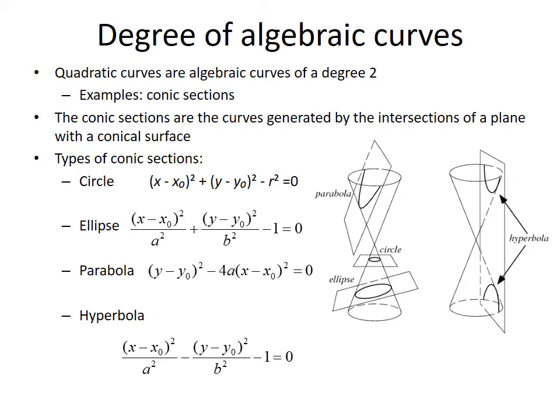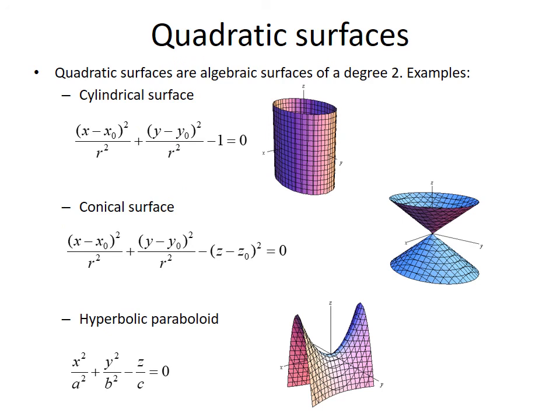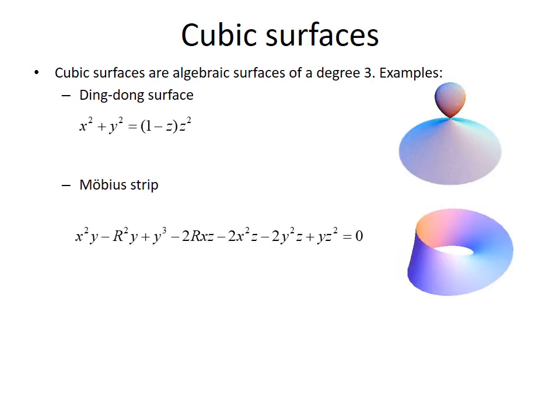Their implicit functions are given at the left. Similarly, algebraic surfaces of degree 2 are called quadratic surfaces. I think that you already got the point and now you understand how we can introduce cubic surfaces.